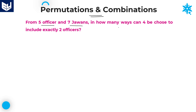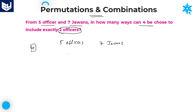The first question: from five officers and seven jawans, in how many ways can four be chosen to include exactly two officers? We have five officers and seven jawans. We need to choose a total of four, and out of four we need exactly two officers — not more, not less. So automatically the remaining two must be jawans.